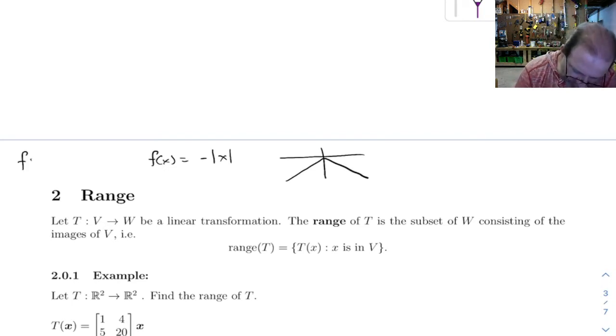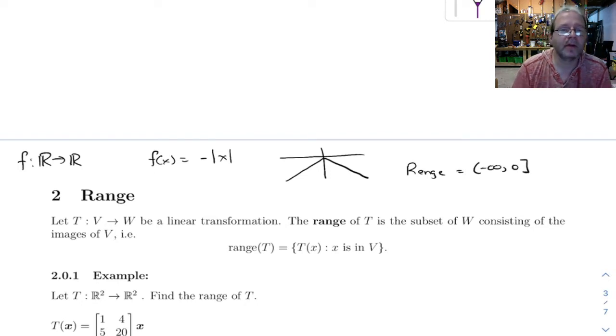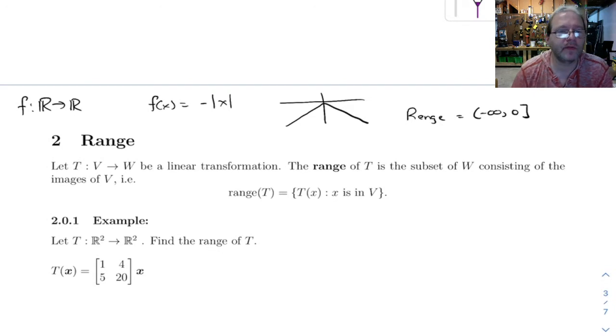This is a function that maps the reals to the reals, but notice you don't get all of the reals as outputs, you only get the negatives and zero together. So the range of this is just going to be everything from minus infinity up to and including zero.